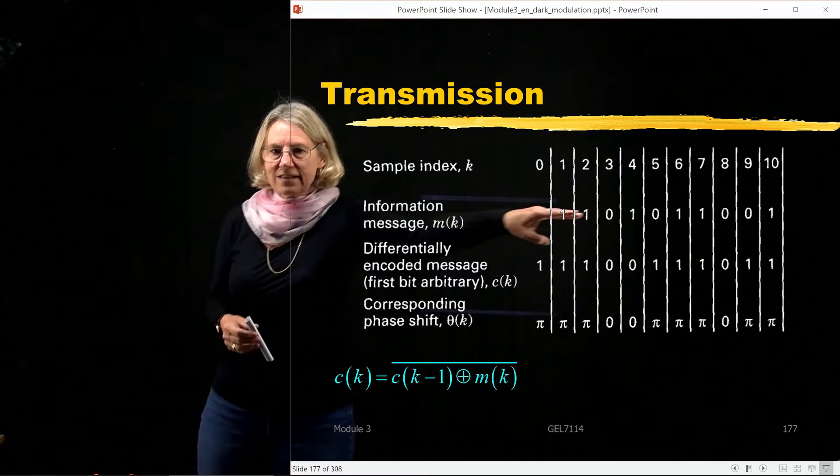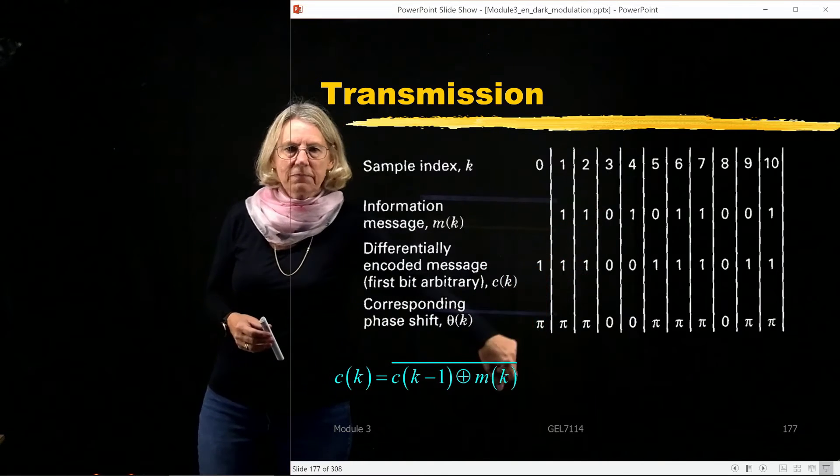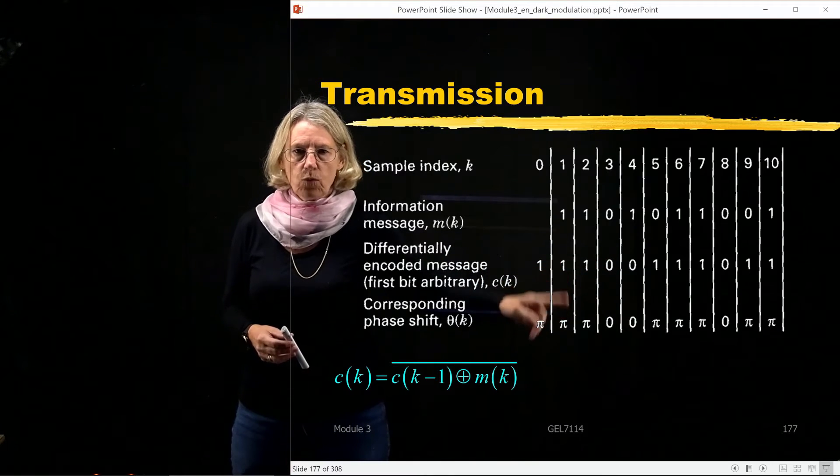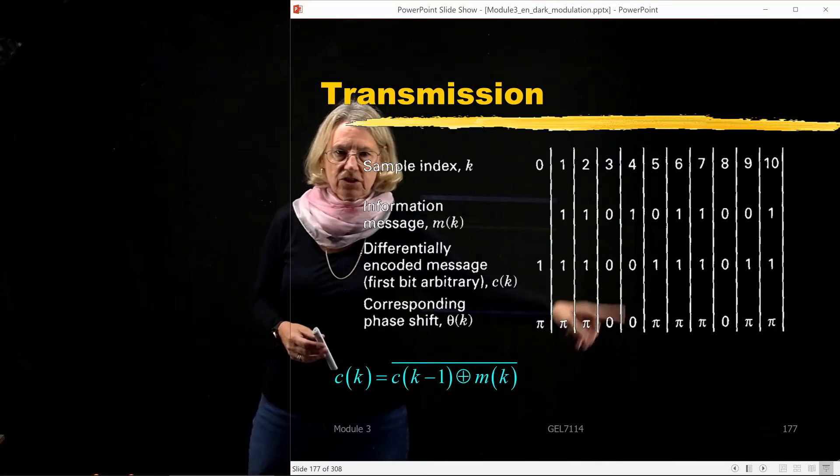in order to take this bitstream and turn it into that bitstream. Now once I've turned it into this bitstream, then of course logical 1 becomes pi, logical 0 is 0.